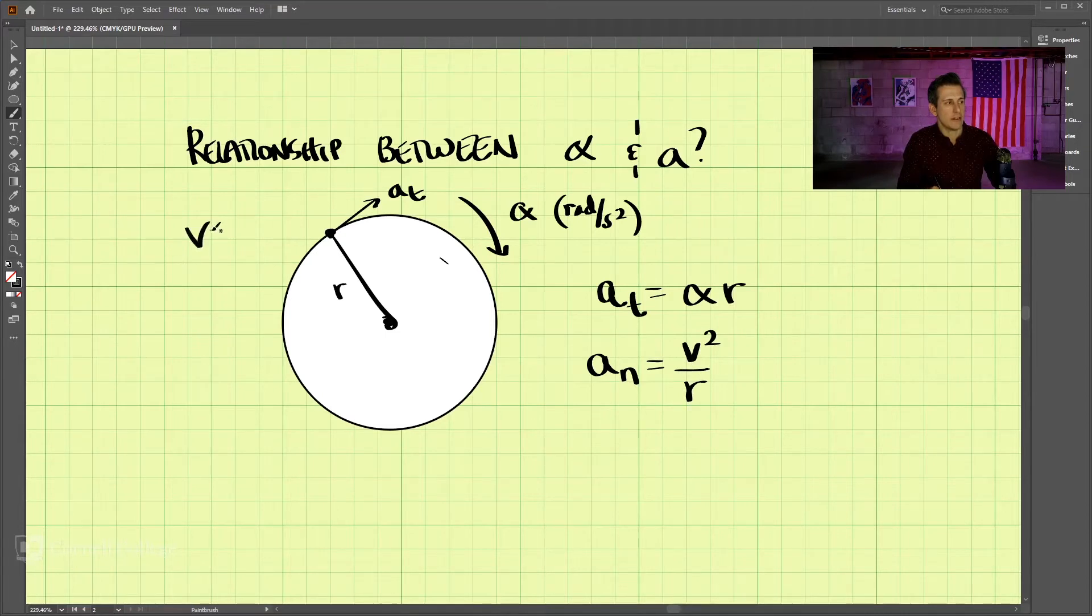The velocity at that point is equal to omega times r. So if we put omega times r into this equation, we have omega times r squared over r, which comes out to omega squared r squared over r. One of the r's cancels, so we just get omega squared r.